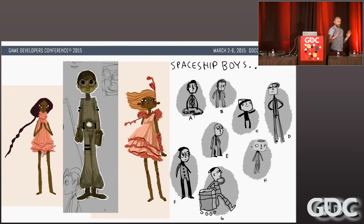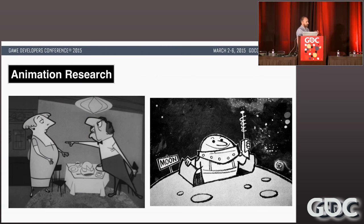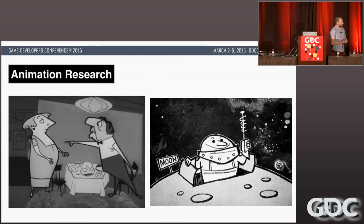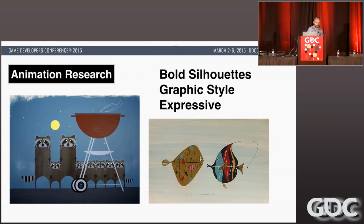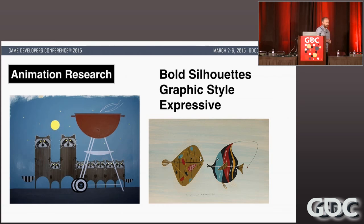Lee Petty and I were taking our lunch breaks and going into one of the back rooms doing drawing sessions. We were focusing on a mid-century modern style — very somewhat limited but really beautiful designs. UPA is one of the studios known for that. I was also really interested in Charlie Harper, the late illustrator — his silhouettes were really bold, he had a very graphic style but also expressive. I thought it would work with Nathan's very painterly backgrounds.